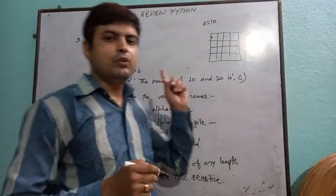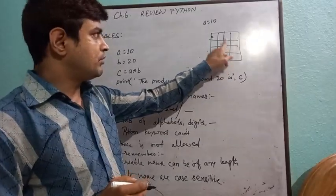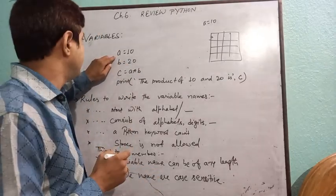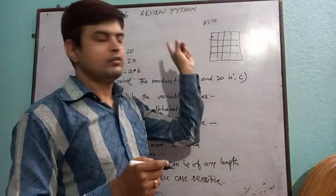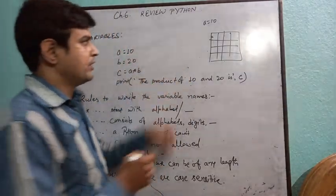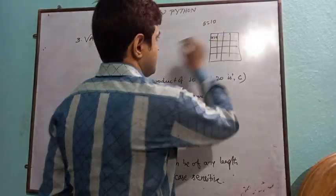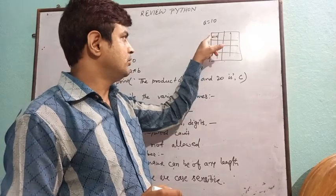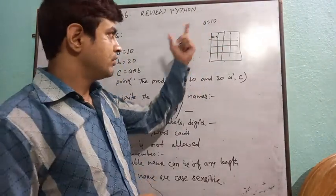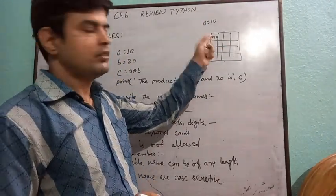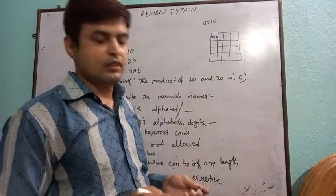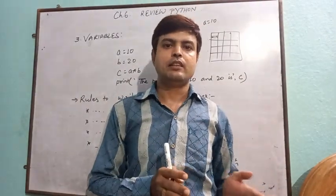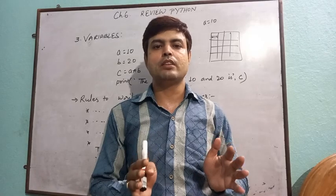When we do so, the computer reserves a space and gives that space the location name 'a', and stores the value that has been assigned — say 10. Whenever we need it, we will just use the variable name, not 10. We use the variable name and bring the value that it holds. So the definition of variable is: a variable is the named memory location that is used to hold some values.